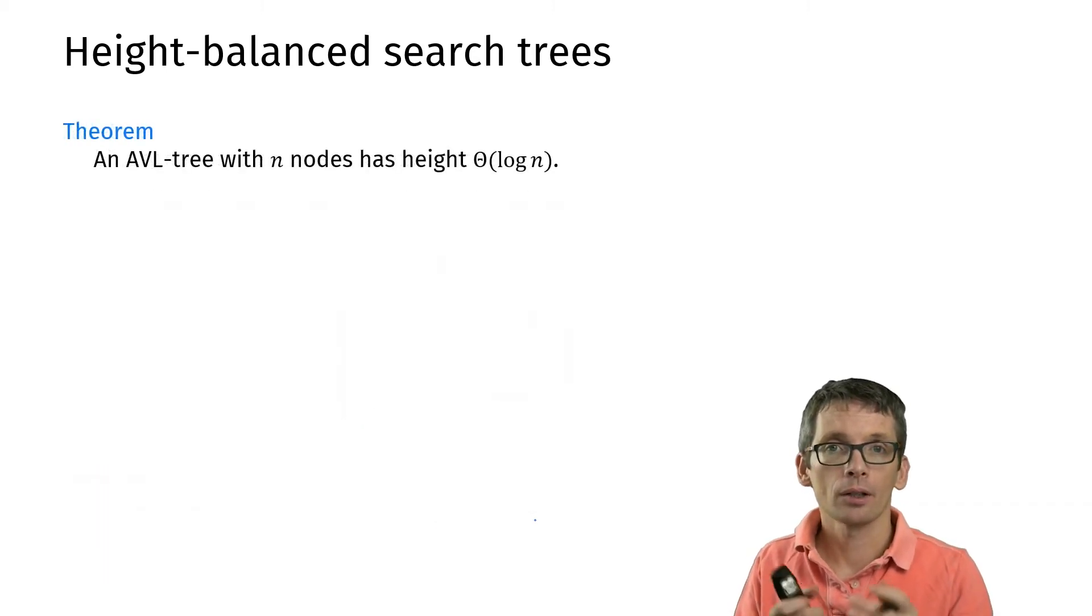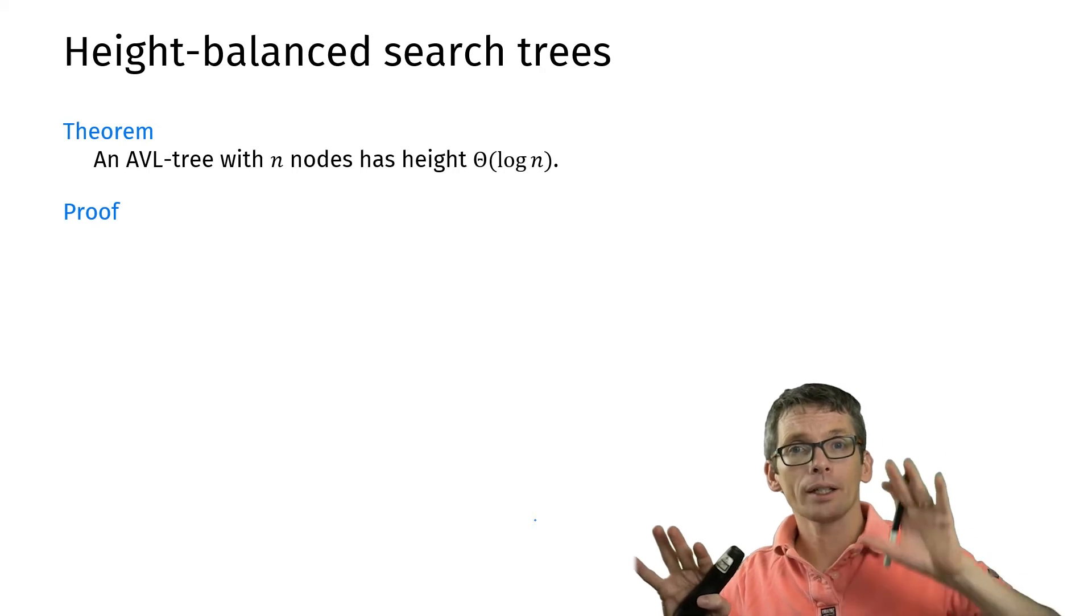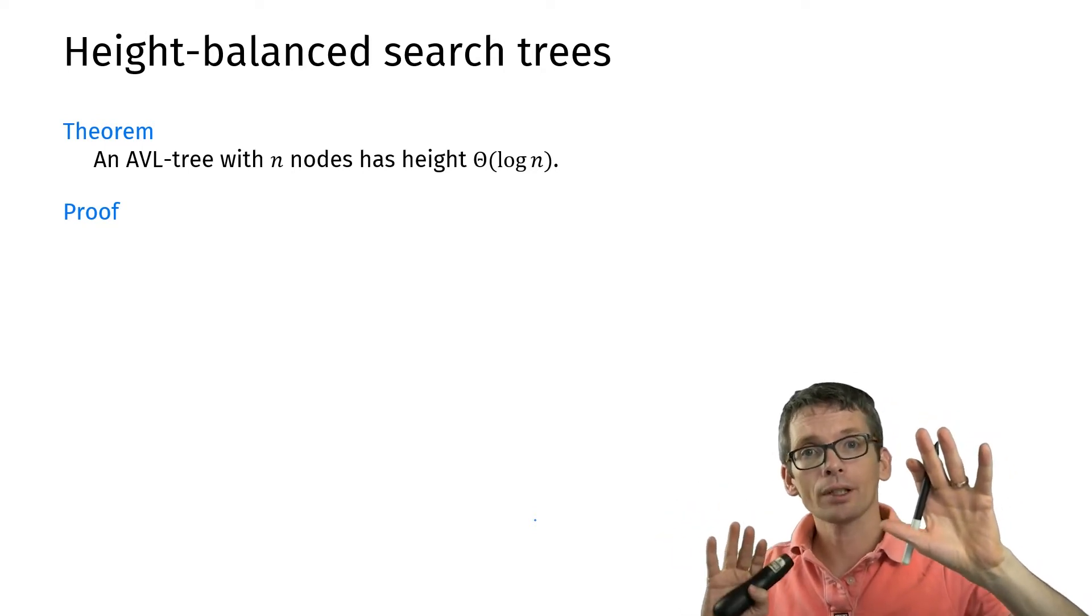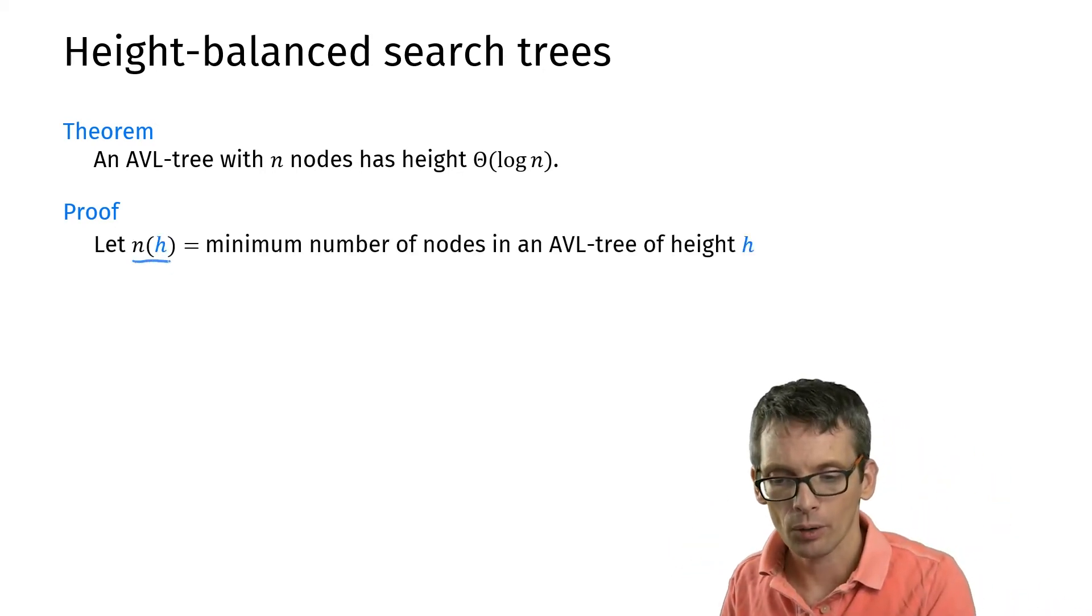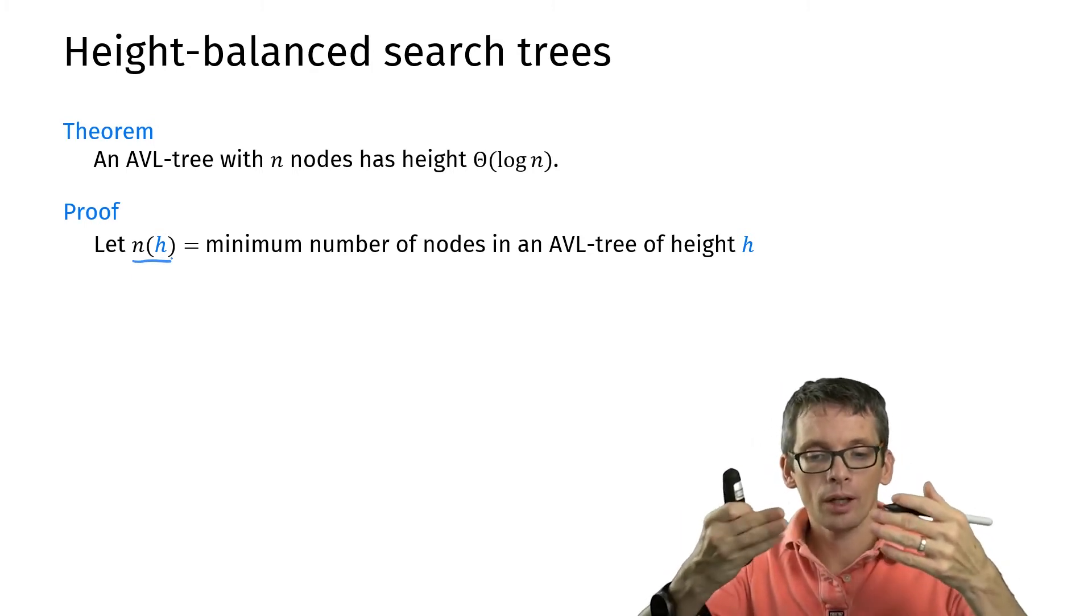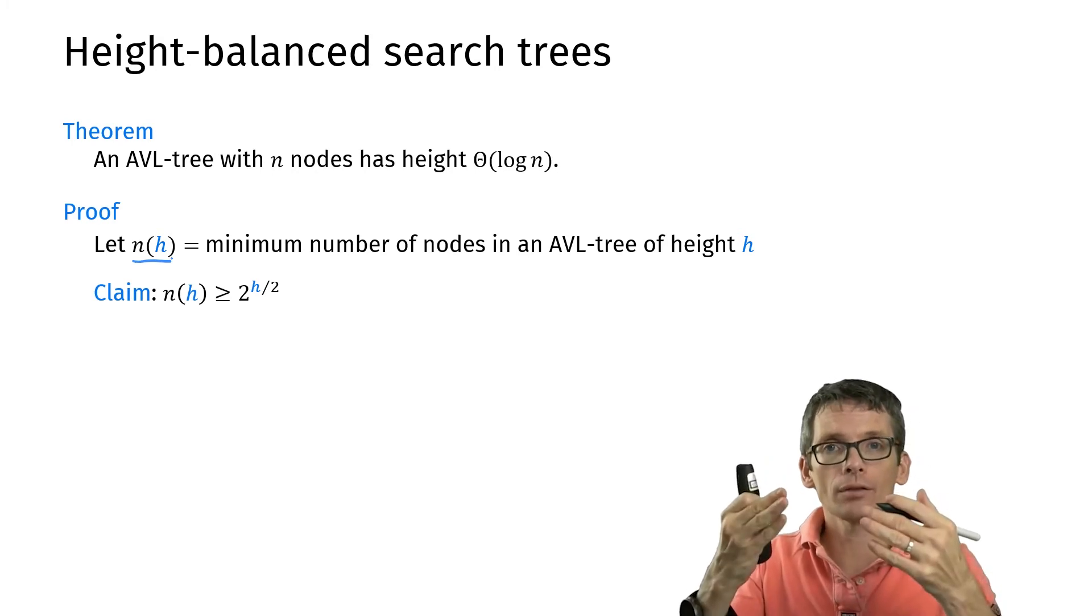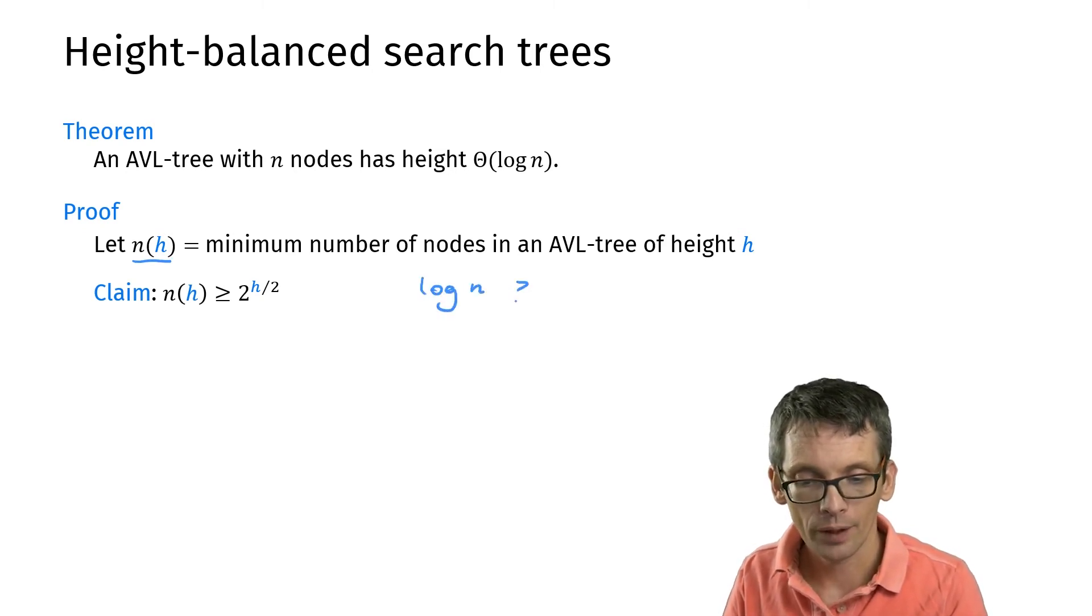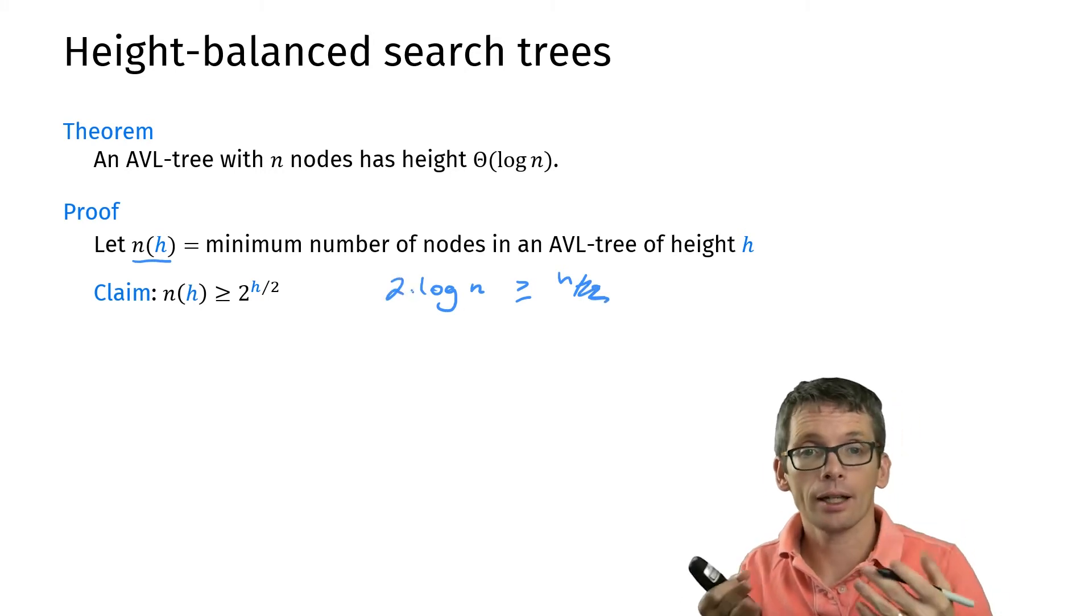How do we prove this? So we can prove this by induction. So what we want to have is given n, what is the maximum h that we could get? We can ask that the other way around. Given h what is the minimum n that we could get? So that proves the same bound and that's how we're going to approach this. So n(h) will be for a given h the minimum number of nodes in an AVL tree of that height. And we're going to prove by induction that n(h) is greater or equal 2^(h/2). And that then gives us the bound that we wanted to have because if we take logarithms on both sides, so then I get log n is an upper bound for h/2, meaning that h is bounded by 2 times log n, so it's order log n exactly what we wanted to have.